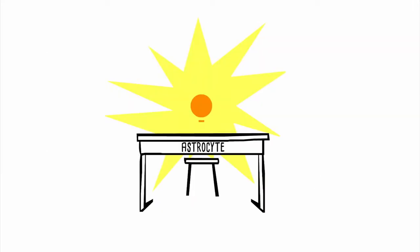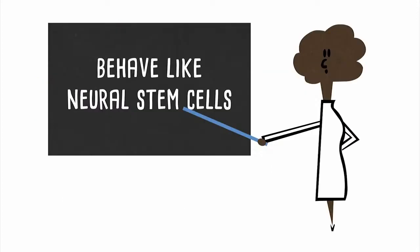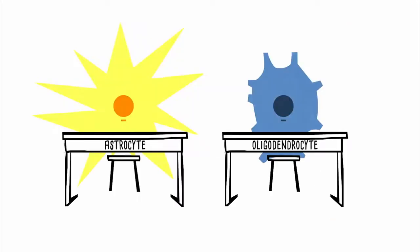They've also discovered that we might be able to teach other kinds of brain cells, such as astrocytes or oligodendrocytes, to behave like neural stem cells and start generating neurons too.